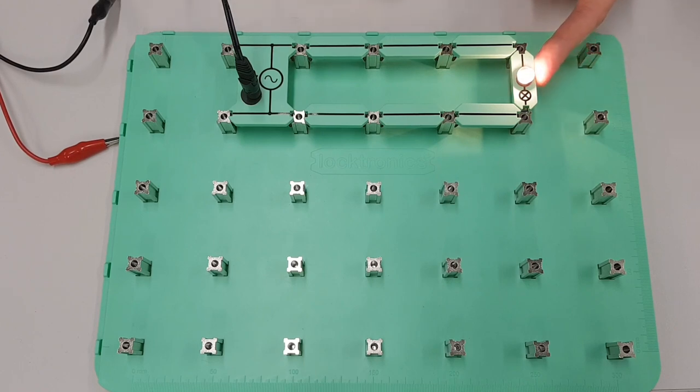Now for a load like a lamp it makes absolutely no difference which way the current is flowing through it because it's always going to illuminate, and the change is happening so quickly inside this circuit that the lamp appears to be constantly illuminated, we can't see it going on and off. If this was a fluorescent lamp we might be able to see a little bit of flicker, but because it's a filament lamp we can't see any change because the filament doesn't cool down in between the change of direction.